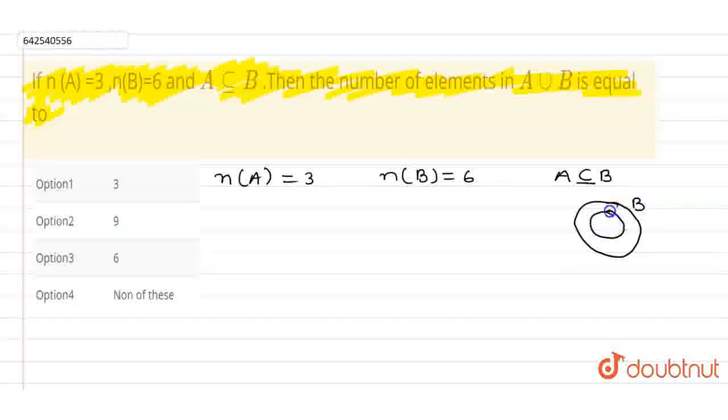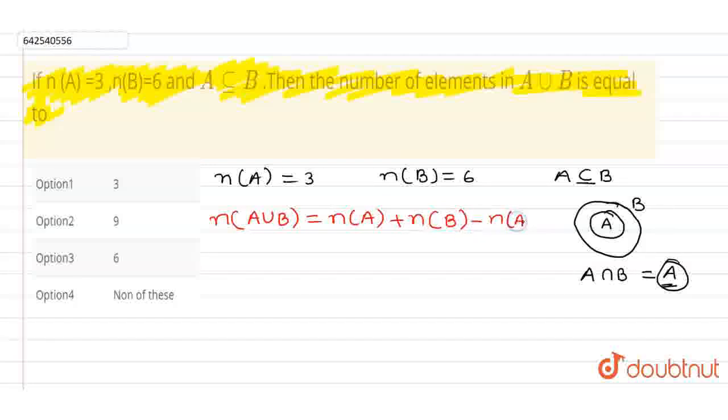So if we do intersection of A intersection B, we got A. Okay, set A. So here I can write as n of A union B equals to n of A plus n of B minus n of A intersection B.